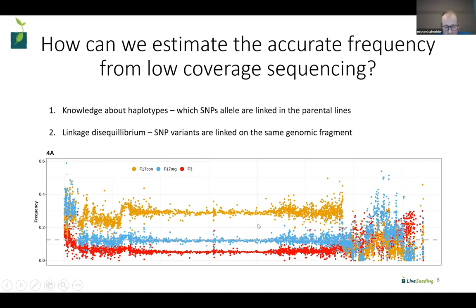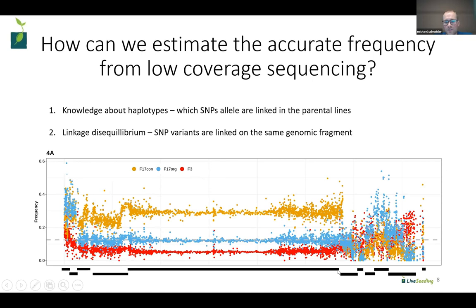We need to know the initial haplotype from the parental lines, and linkage disequilibrium is helpful because various SNPs are linked on the same genomic fragment. On actual data, selecting one example chromosome from the rye genome for three populations of the same origin, you can see the linkage blocks marked in black that remain together. In the centromeric region we have the biggest block, and toward the telomeric sides the blocks are still quite large — several million base pairs. This allows us to construct highly accurate haplotype allele frequencies instead of single-nucleotide-based allele frequencies.